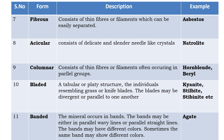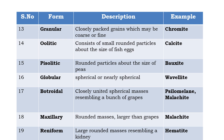Banded form occurs in bands of parallel wavy or straight lines which may show different colors — an excellent example is agate. Granular form consists of closely packed grains which may be coarse or fine — example is chromite. Oolitic form consists of very small rounded particles about the size of fish eggs — example is calcite.